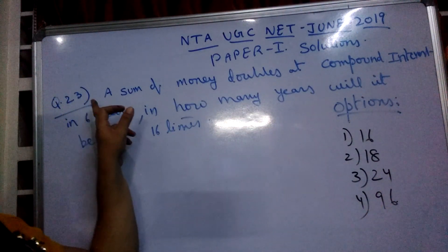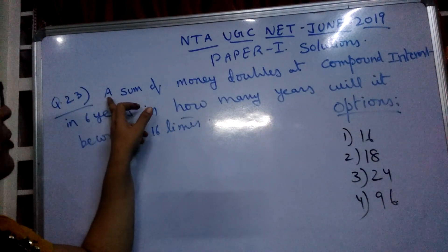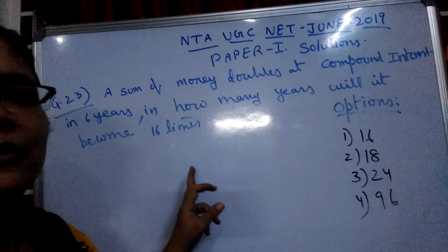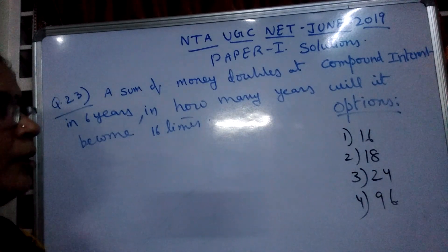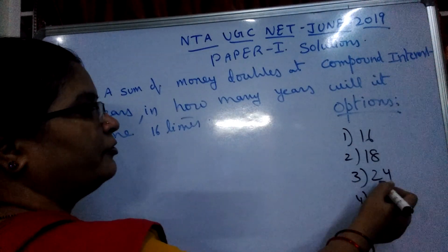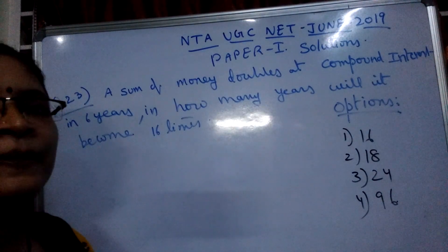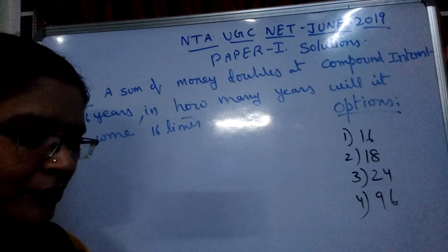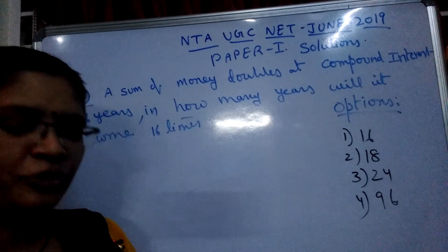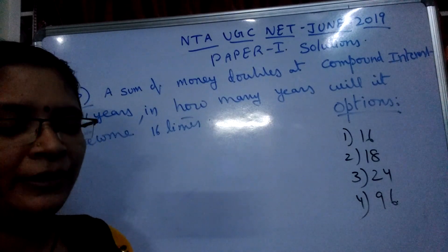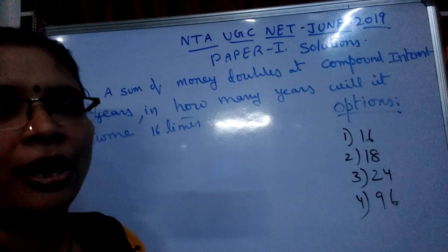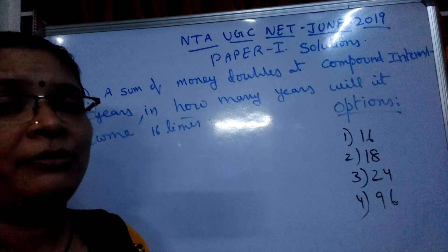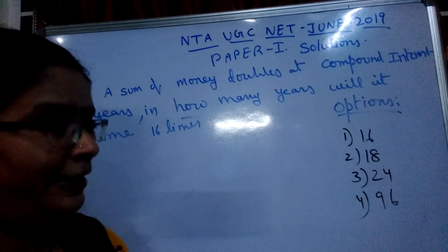Look at question number 23. A sum of money doubles at compound interest in 6 years. In how many years will it become 16 times? The options are given as 16, 18, 24, and 96. The solution for such questions is very simple — we have to find the answer quickly for such mathematical questions in the NDA net.